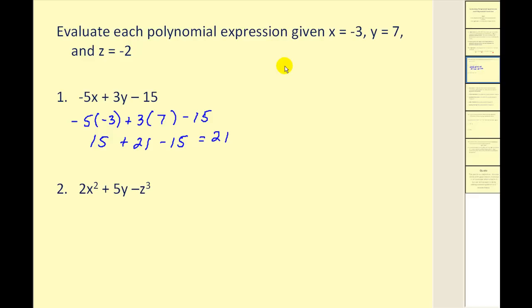The first step is to replace the variables with the given values. Here we have 2 times -3 squared plus 5 times 7 minus -2 cubed. Let's simplify our exponents first. -3 squared would equal 9. -2 cubed would equal -8. Let's continue to simplify. Here we'd have 18 plus 35 plus 8, which is equal to 61.